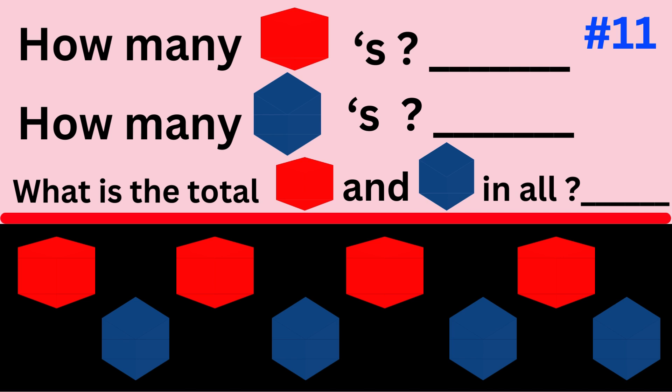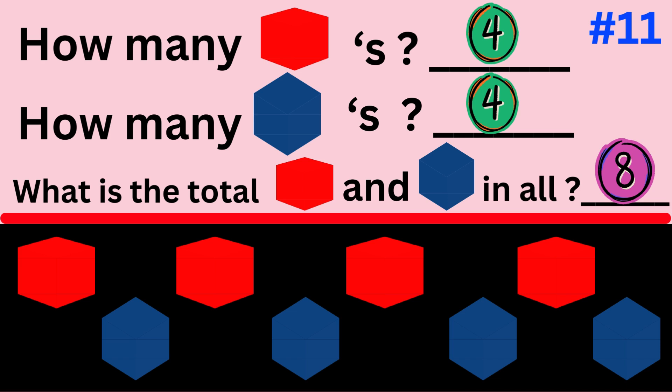Word problem number eleven. The word problem asks how many red cubes are there, how many blue cubes are there, and what is the total of red and blue cubes in all? The answer is there are four red cubes and four blue cubes, so there are eight cubes in all.